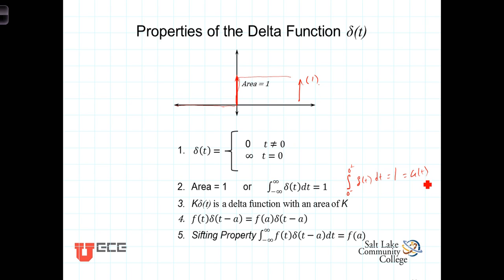Now, we can scale the delta function by multiplying by a constant. So k times delta t is a delta function with an area of k. Because k times infinity, if you're thinking of it as just multiplying the amplitude, that's not what's happening. You're actually multiplying the area. So k delta t is a delta function with an area of k.